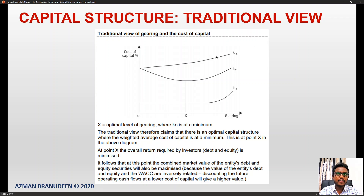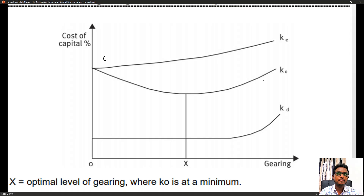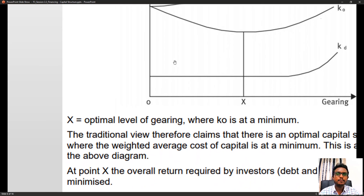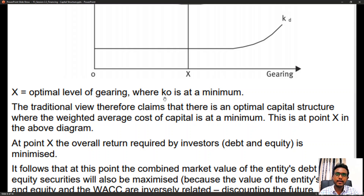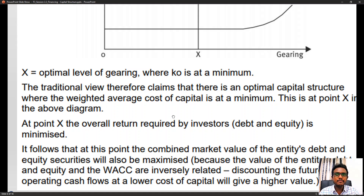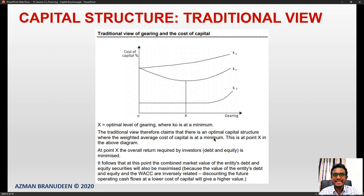The traditional view of gearing and cost of capital is represented on a cost of capital graph. You have the cost of equity, the cost of debt, and the blended cost of capital — the weighted average cost of capital — with an optimal gearing point at X, where the WACC is at a minimum. The traditional view claims there is an optimal capital structure where WACC is minimized.